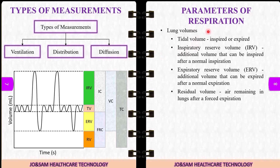The parameters of respiration include lung volumes: tidal volume, inspiratory reserve volume, expiratory reserve volume, and residual volume. In the spirogram, upward curves represent inspiration and downward curves represent expiration. Tidal volume is the amount of air either inspired or expired — normally 500 ml.